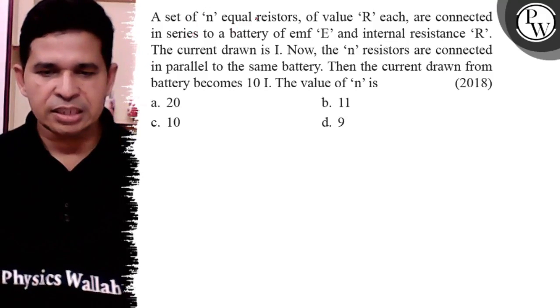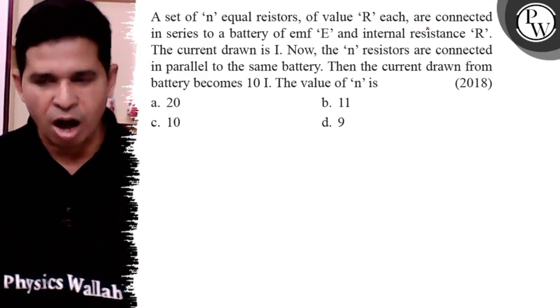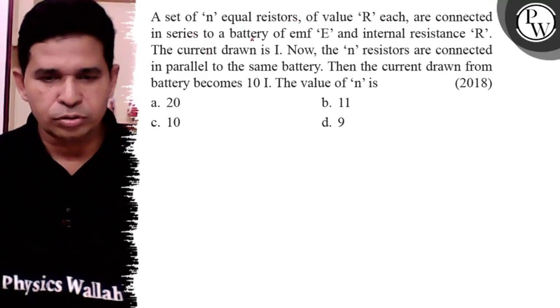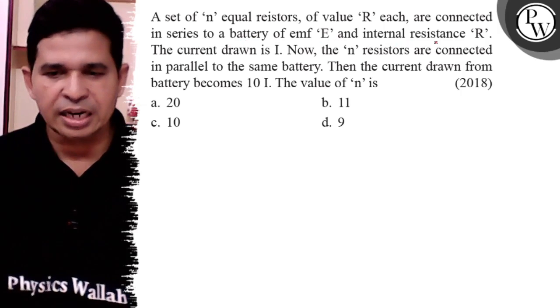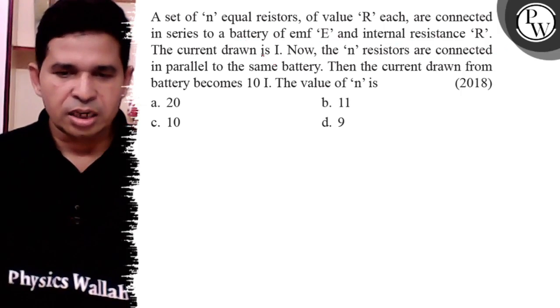A set of N equal resistors of value R are connected in series to a battery of EMF E and internal resistance R. The current is I.